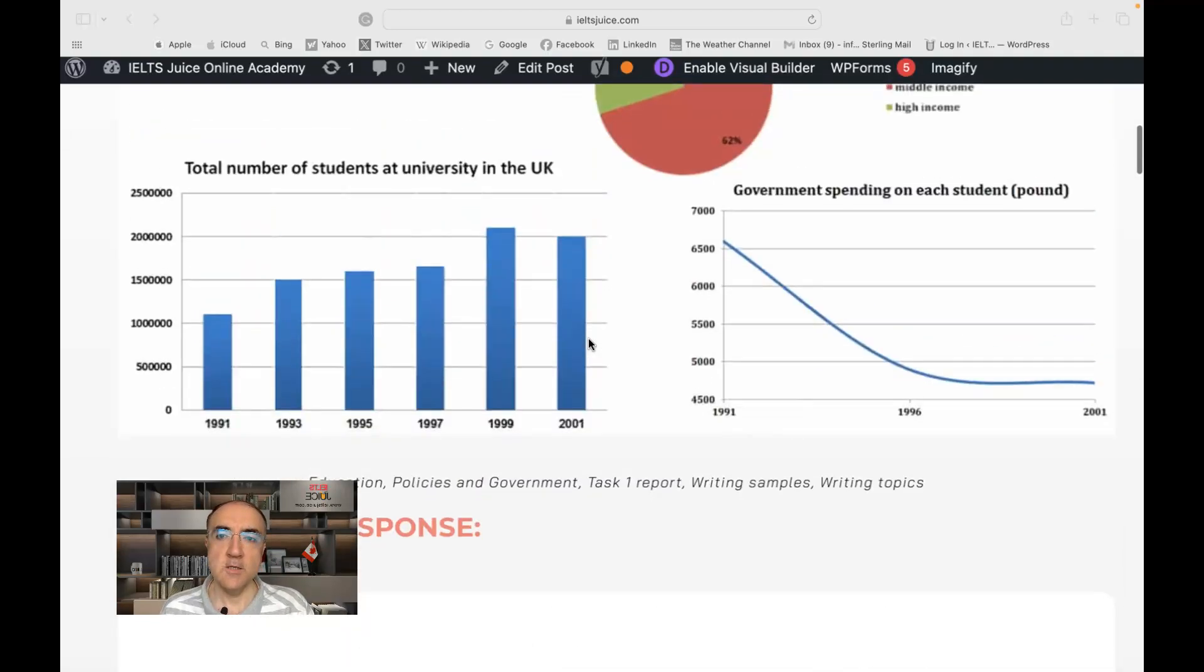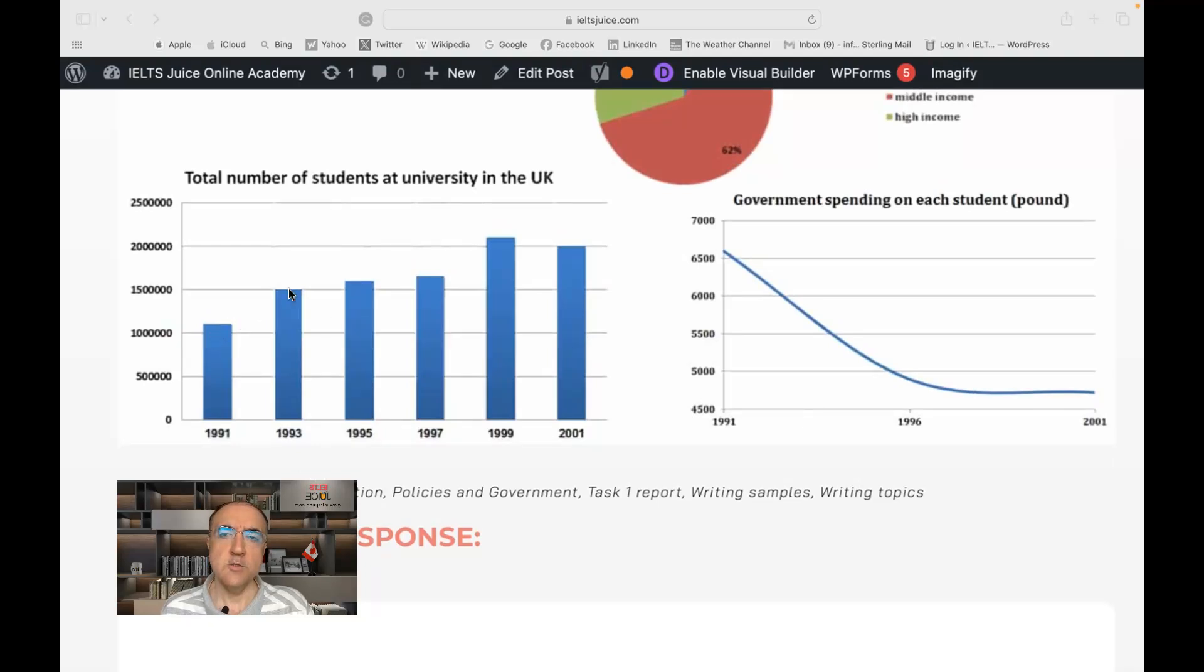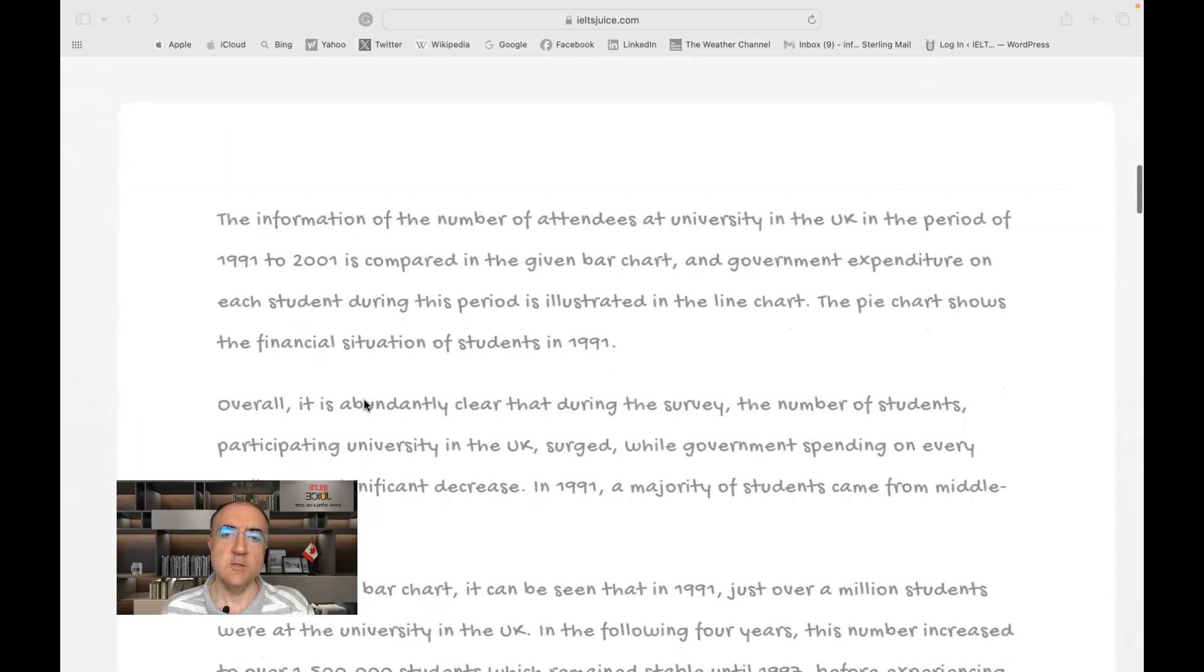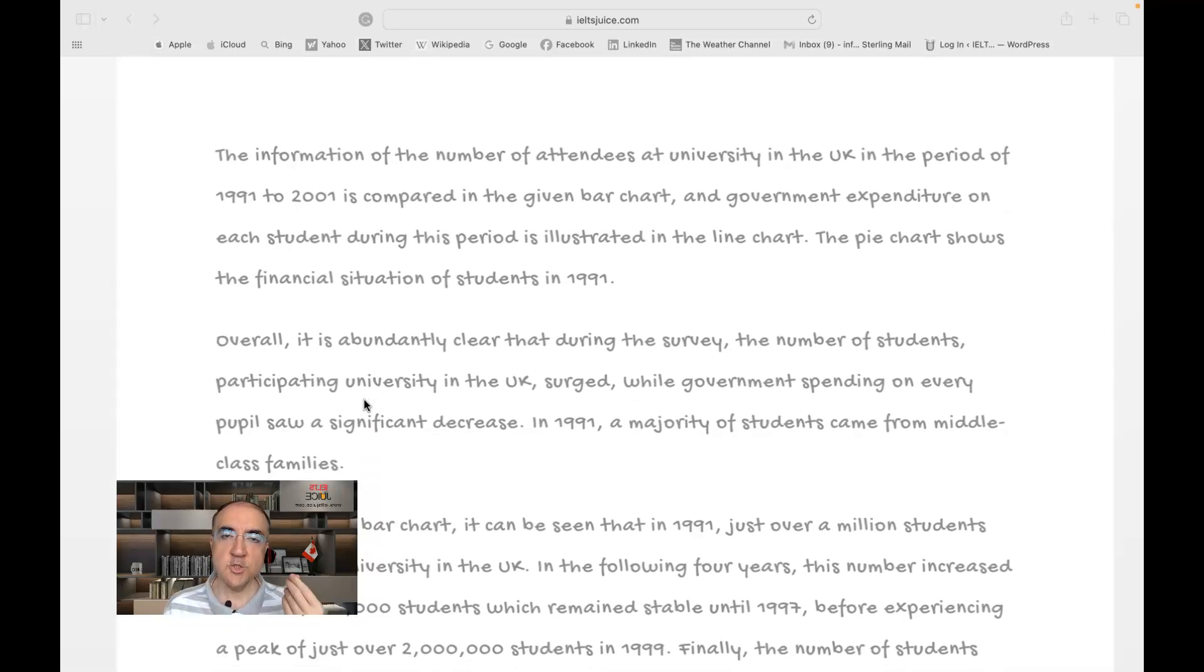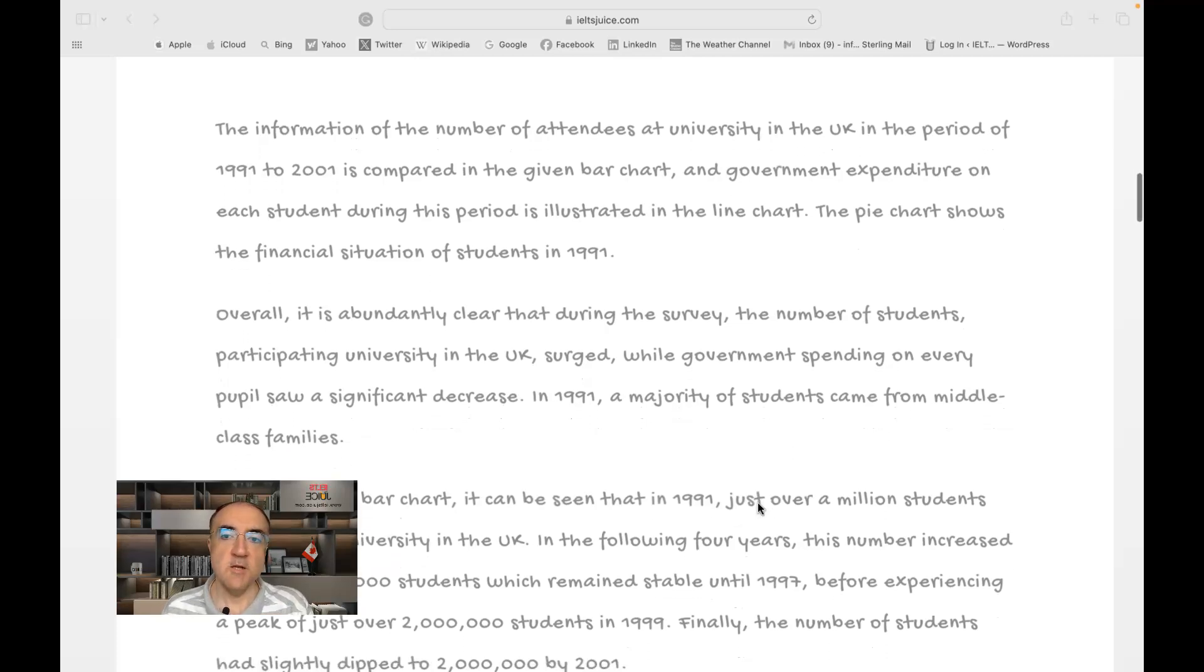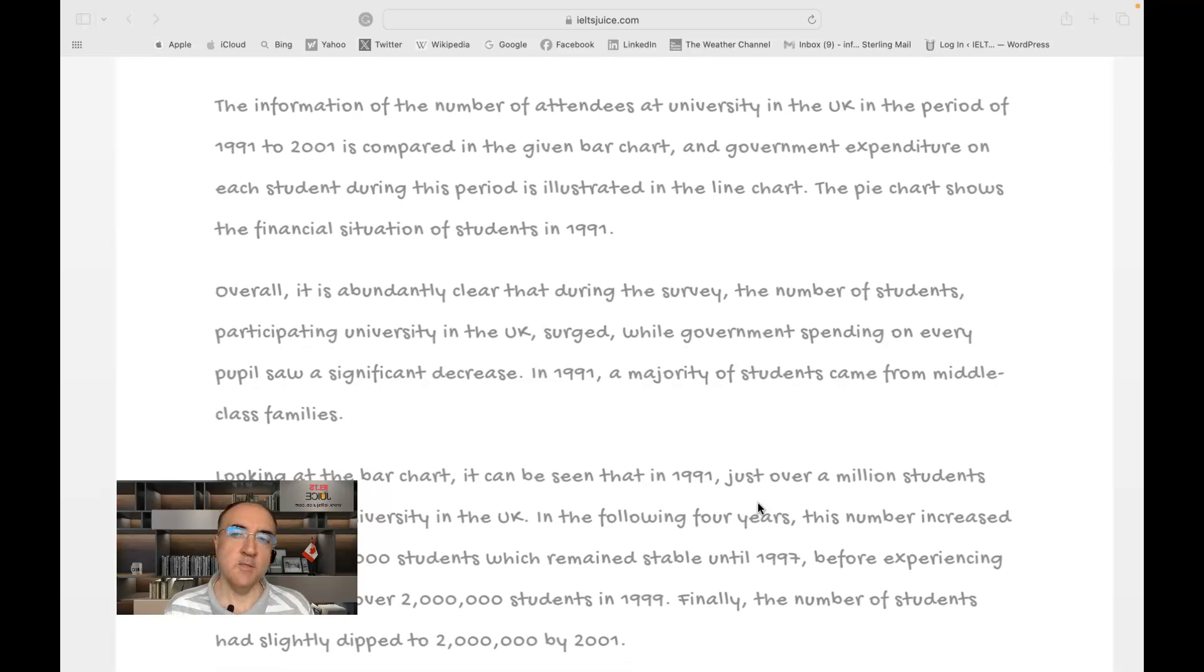I wouldn't call this surge because it sounds, surge is more dramatic. It's a significant change, but still, I would use words like went up. Surged implies a dramatic change. While government spending on every pupil, well, pupil is not a very good choice of word because a pupil focuses on very young, very young learners. And university students, we know they are not that young. Saw a significant decrease. In 1991, a majority of students came from middle-class families.